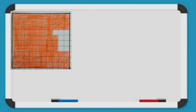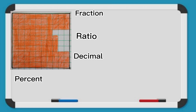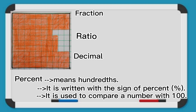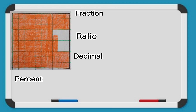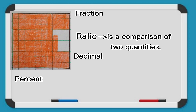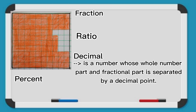Let us use this illustration to visualize fraction, ratio, decimal, and percent. Percent means hundreds — it is written with the percent sign and is used to compare a number with 100. Fraction is a part of a whole or a group. Ratio is a comparison of two quantities. And decimal can be defined as a number whose whole number part and fractional part is separated by a decimal point.